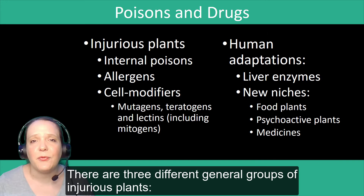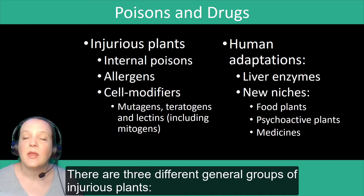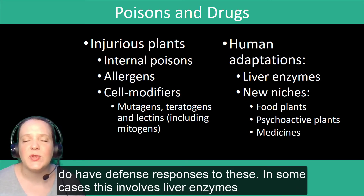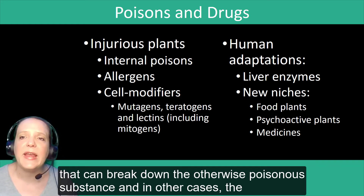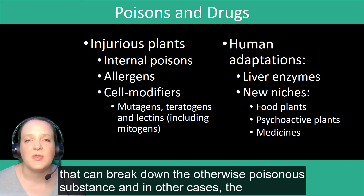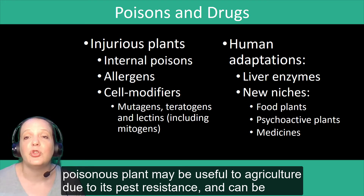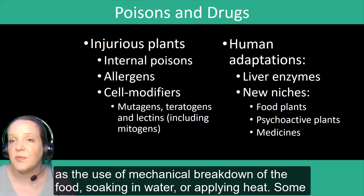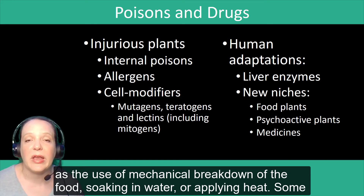There are three different general groups of injurious plants: internal poisons, allergens, and cell modifiers. Humans do have defense responses to these. In some cases, this involves liver enzymes that can break down the otherwise poisonous substance. In other cases, a poisonous plant may be useful to agriculture due to its pest resistance, and can be eaten only following intensive processing through different human technologies, such as mechanical breakdown of the food, soaking in water, or applying heat.